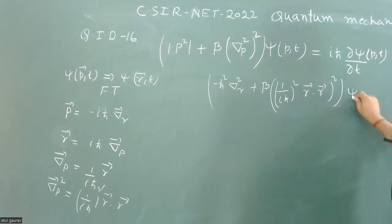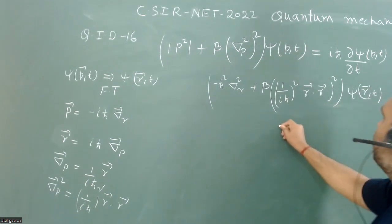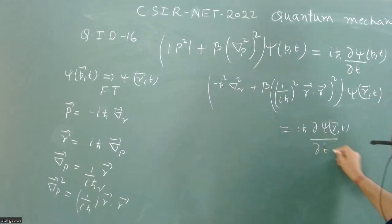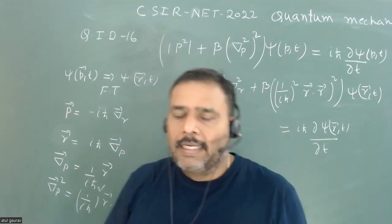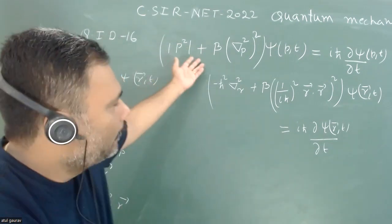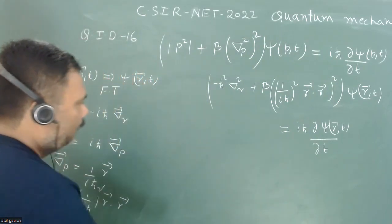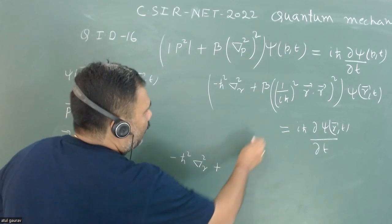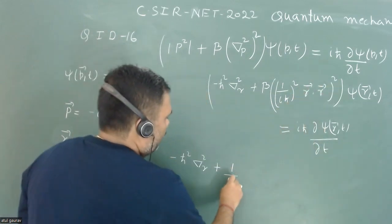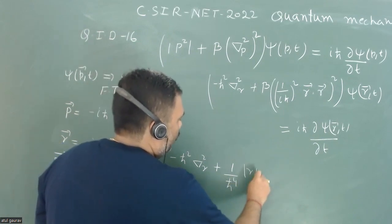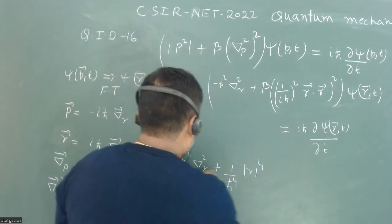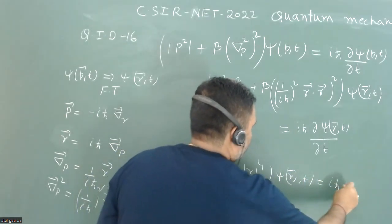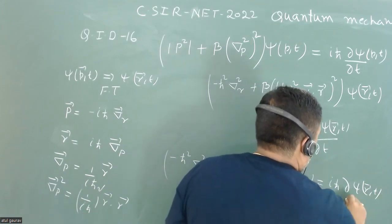This whole thing can be written as ψ(r,t), and equals iℏ ∂ψ(r,t)/∂t. Time is not going to change; we just write everything in terms of position where it was written in momentum and time. So writing this whole thing: minus ℏ² del²_r, plus (1/ℏ⁴) mod r to the power 4, acting on ψ(r,t), equals iℏ ∂ψ(r,t)/∂t.